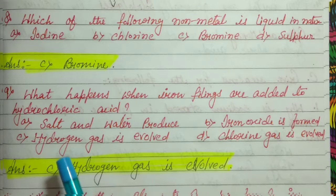Question 6: What is an amphoteric oxide? Give an example. A metal oxide which shows both basic and acidic behavior is known as an amphoteric oxide. For example, zinc oxide (ZnO) and aluminium oxide (Al₂O₃) are amphoteric oxides.